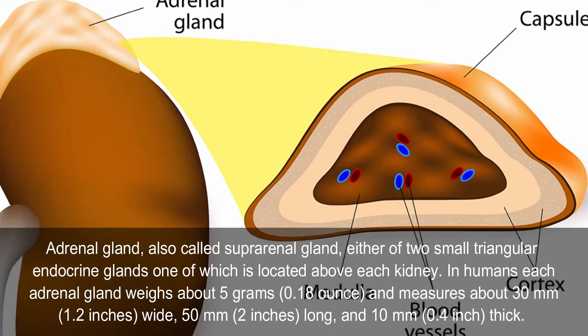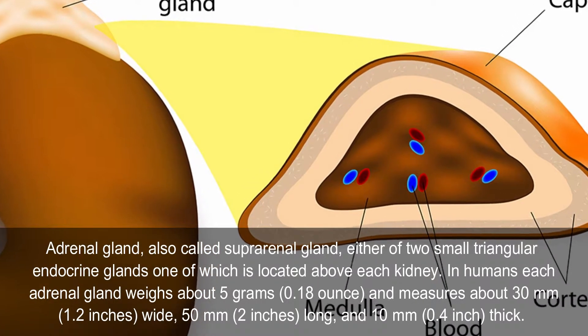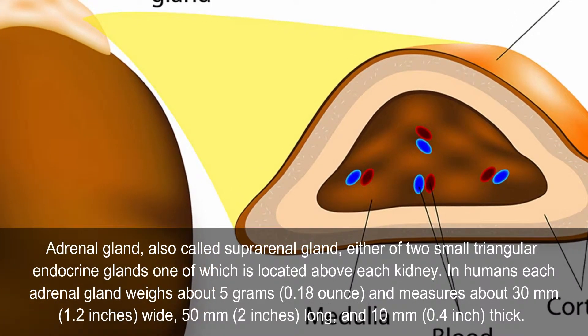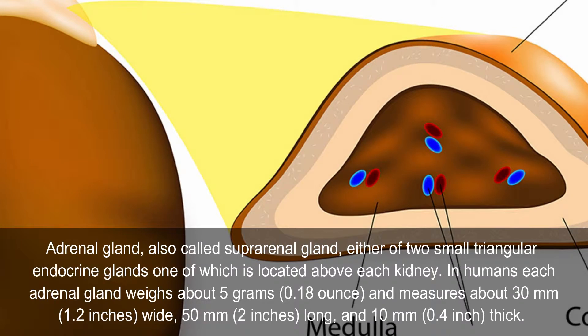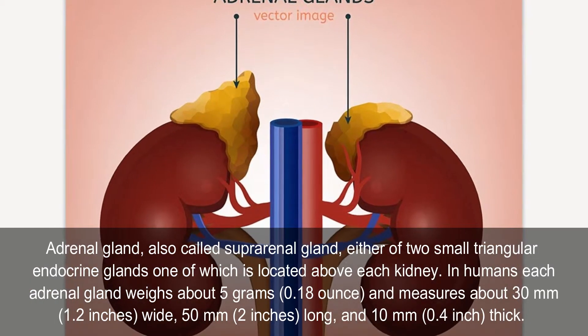Adrenal gland, also called suprarenal gland, either of two small triangular endocrine glands, one of which is located above each kidney.